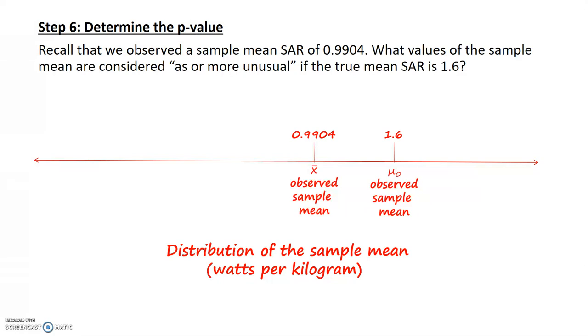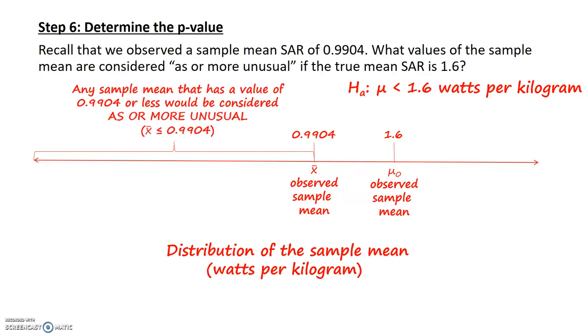Next, recall what the alternative hypothesis looked like. We said that the alternative was that the mean was less than 1.6. So the more unusual part would be all sample means that are less than 0.9904. This tells me that any sample mean that has a value of 0.9904 or less would be considered as or more unusual. I have to keep this in mind when finding the p-value.